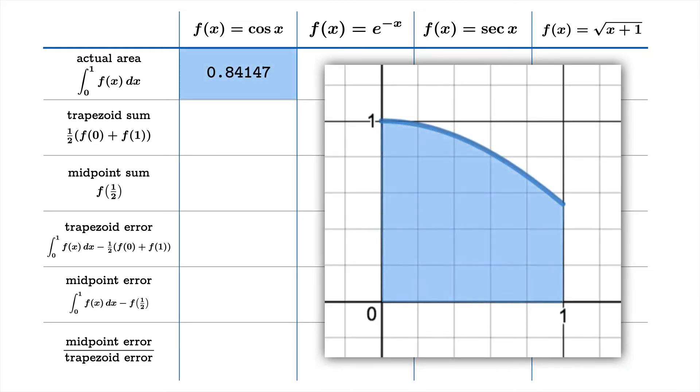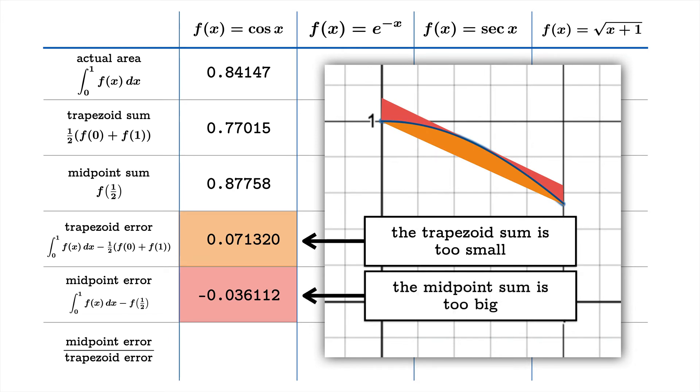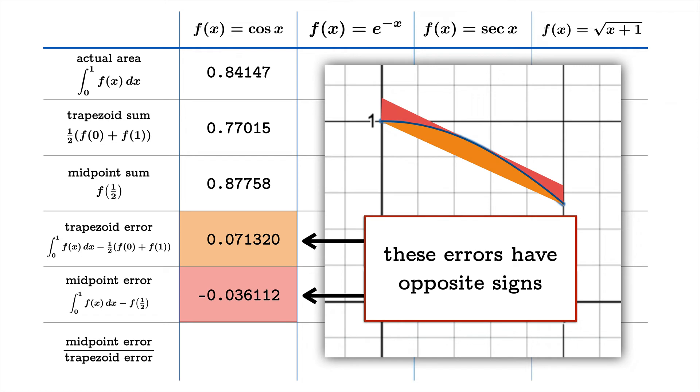We've got the cosine function. The actual area is about 0.84147. Then we calculate the trapezoid sum, which is clearly smaller. Then we'll calculate the midpoint sum, which is a little bit larger. Now we'll calculate the midpoint error, taking the actual area and subtracting off the midpoint sum. Since the midpoint sum is a little too large, we're getting a negative error here. Then we calculate the trapezoid error, which is a positive error because the trapezoid sum is too small. When we take the actual error minus the trapezoid sum, we get a positive number. Trapezoid sum is too small, midpoint sum is too big, and these errors have opposite signs because of that.